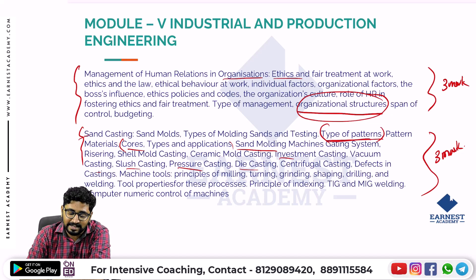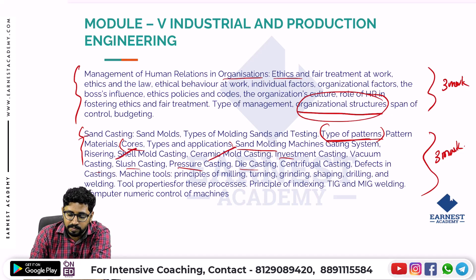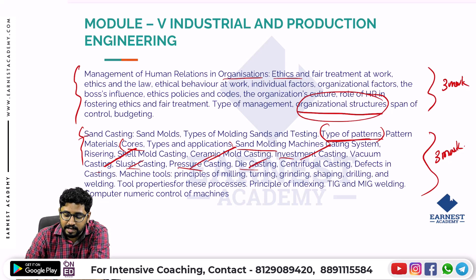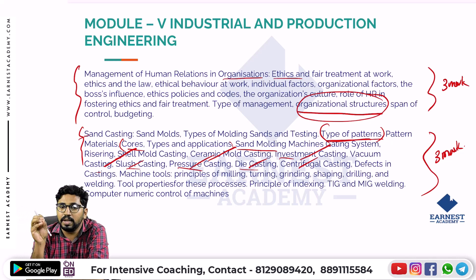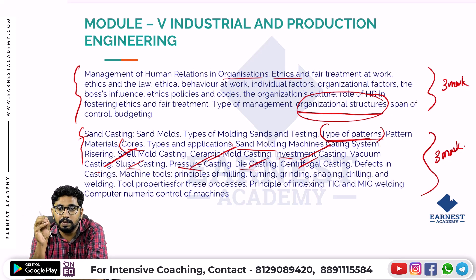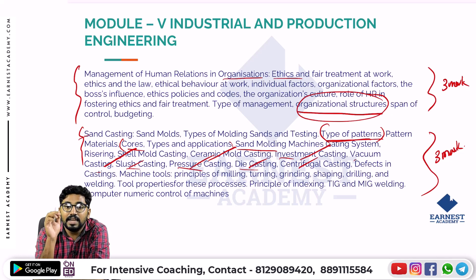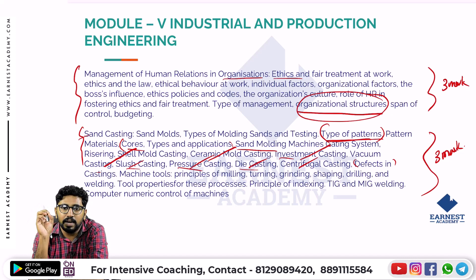Different types of casting are also important — shell mold casting, ceramic casting, investment casting, vacuum casting, slash casting, pressure casting, die casting, and centrifugal casting. If you see the name of a casting method, you should know the type of casting. Defects in casting are also very important exam areas. Try getting the type of pattern, different types of casting process, and defects in casting.